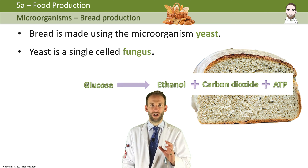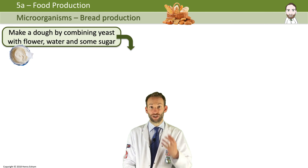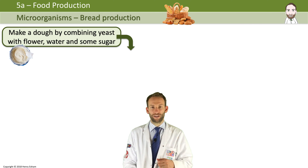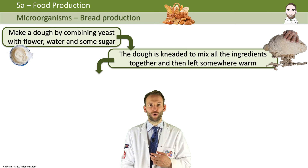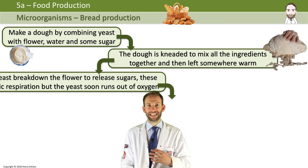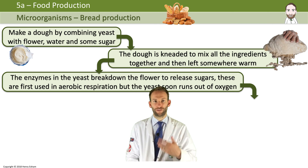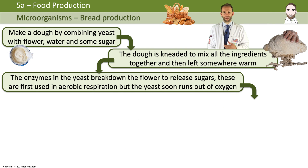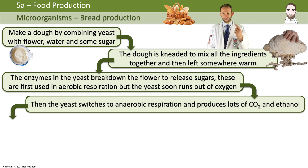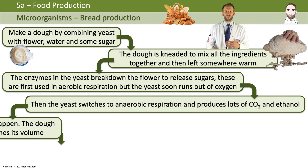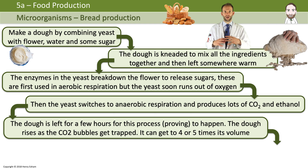In detail, the process works as follows: first you make a dough by combining yeast with flour, water, and some sugar. The dough is then kneaded to mix all the ingredients together and left somewhere warm. The enzymes in the yeast break down the flour to release sugars needed for anaerobic respiration. They do aerobic respiration first, but the oxygen soon runs out and they quickly switch to anaerobic respiration — fermentation — producing CO2 and ethanol.